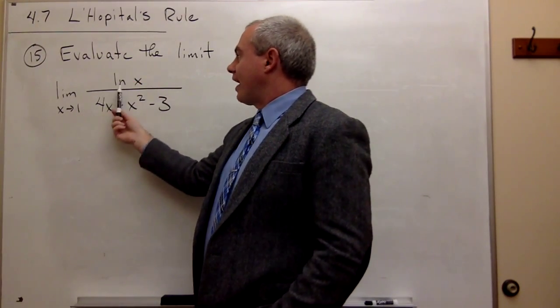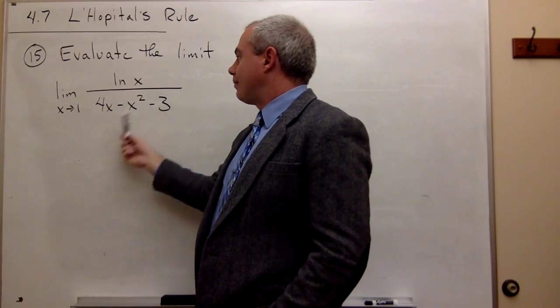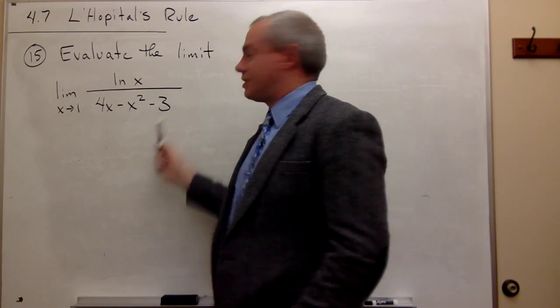Limit as x goes to 1 of ln x divided by 4x minus x squared minus 3.